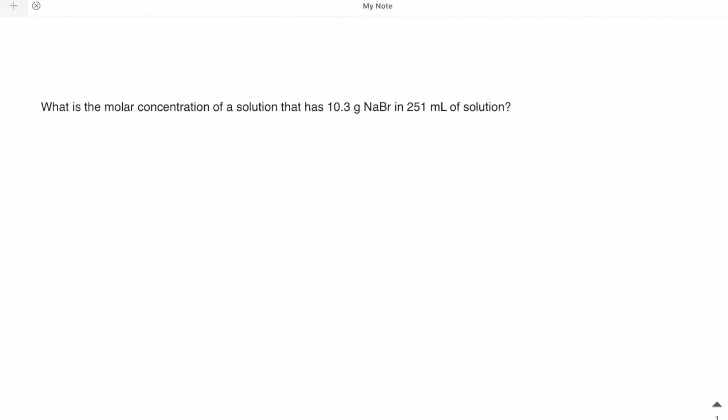So, let's take a look at a question about concentration, in this case about molarity or molar concentration. It's asking what's the molar concentration of a solution that has 10.3 grams sodium bromide in 251 milliliter of the solution. The key here is to remember that definition of molarity where one molar, which has the unit capital M, is equal to one mole per liter. So, what we need to figure out is convert the units to moles per liter, and that would be the molarity.